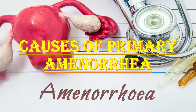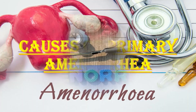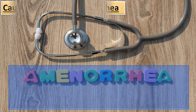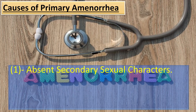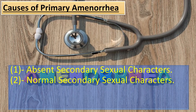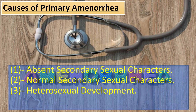In order to understand the main causes of primary amenorrhea, let us understand these four groups of disorders. First, absent secondary sexual characteristics. Second, normal secondary sexual characteristics. Third, heterosexual development. And fourth, constitutional development.